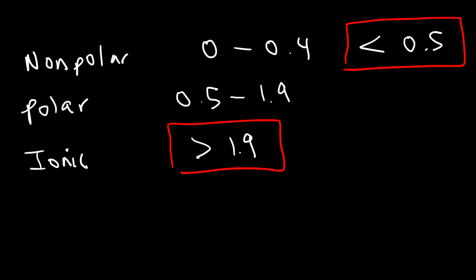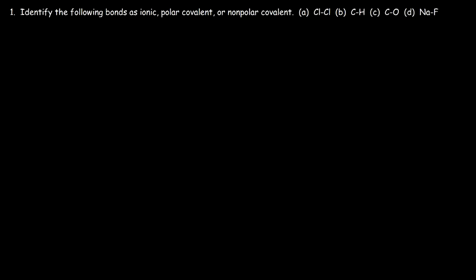The best way to distinguish an ionic bond is to look for two things: one, is it composed of ions with positive and negative charges; two, is it composed of a metal and a nonmetal? To distinguish a polar covalent bond from a non-polar covalent bond, look at the electronegativity values — if the difference is 0.5 or more, it's polar covalent. Covalent bonds are typically composed of nonmetals; a metal bonded to a nonmetal is usually ionic.